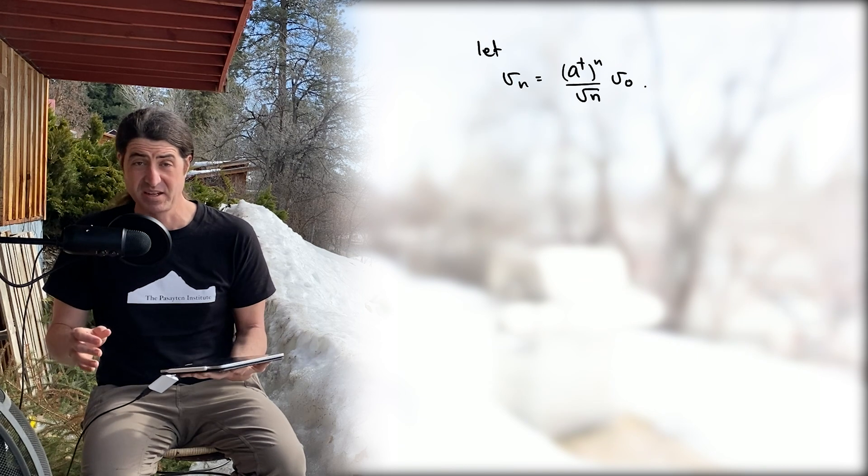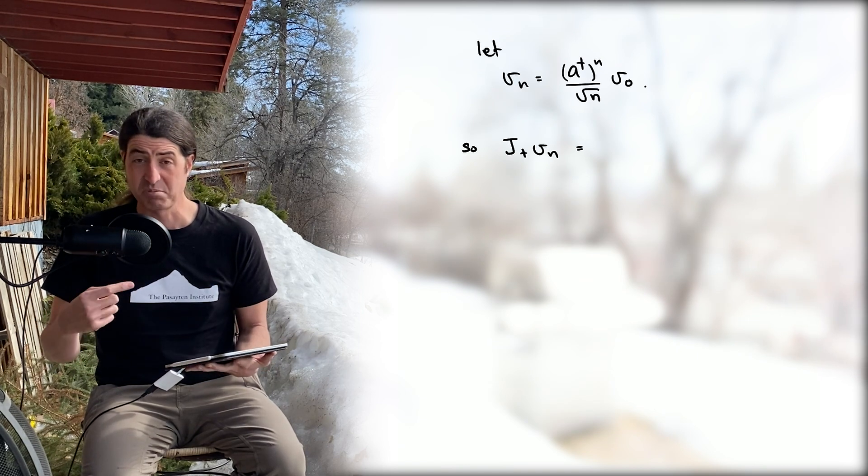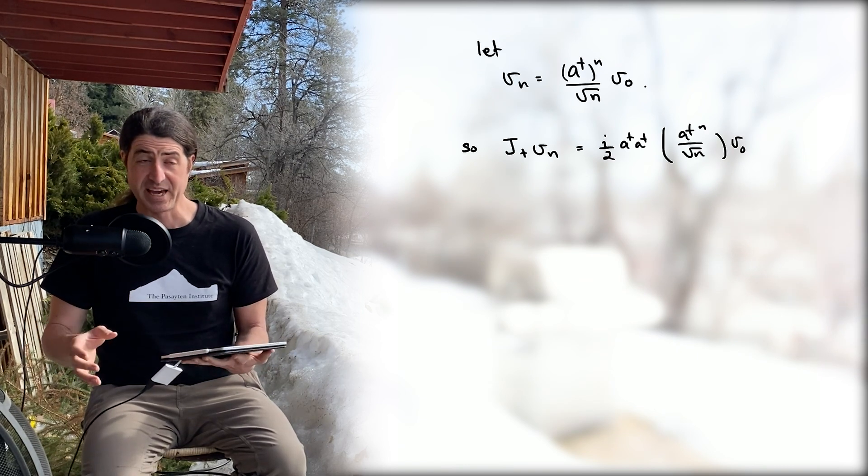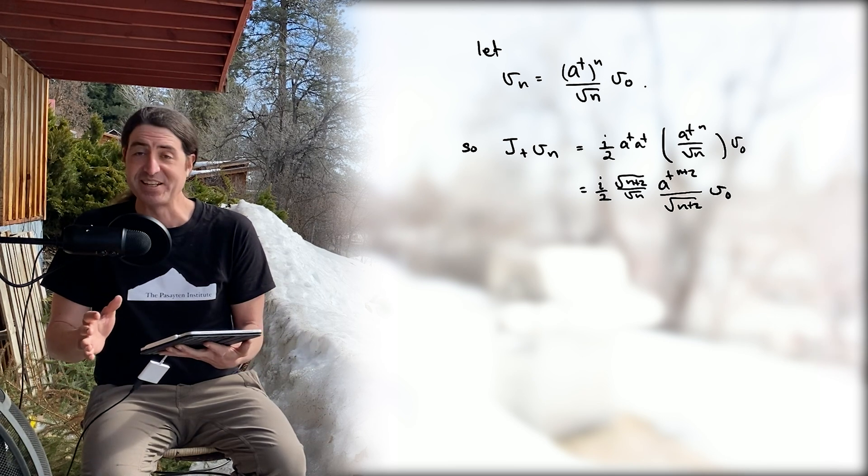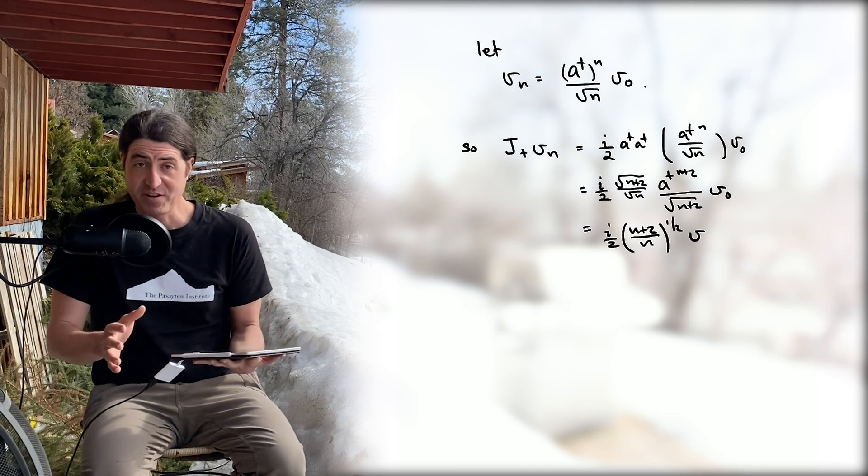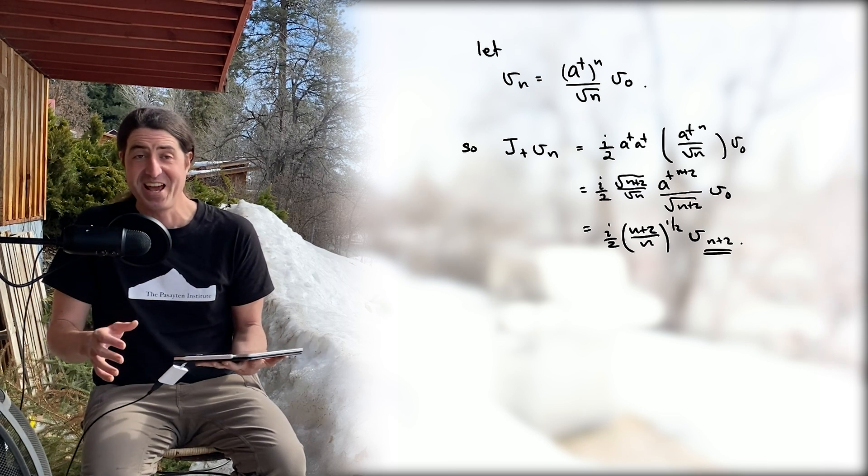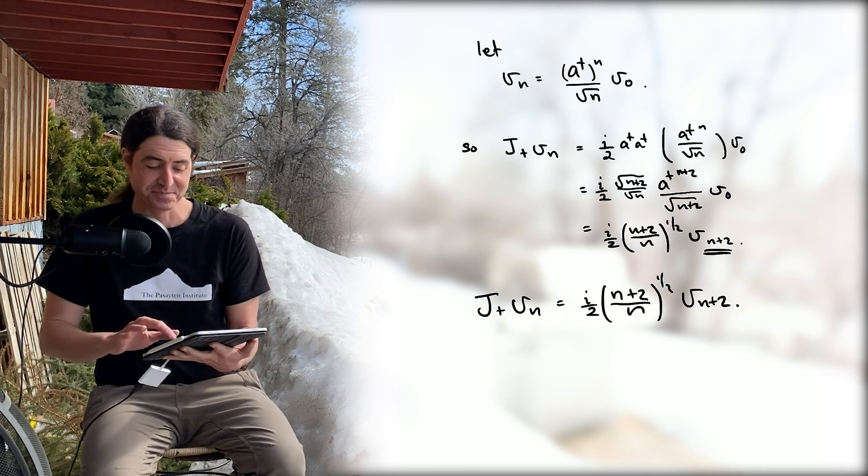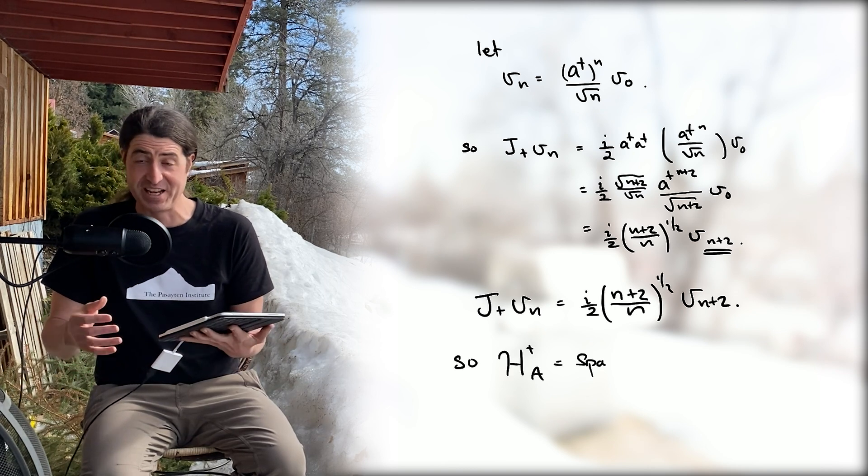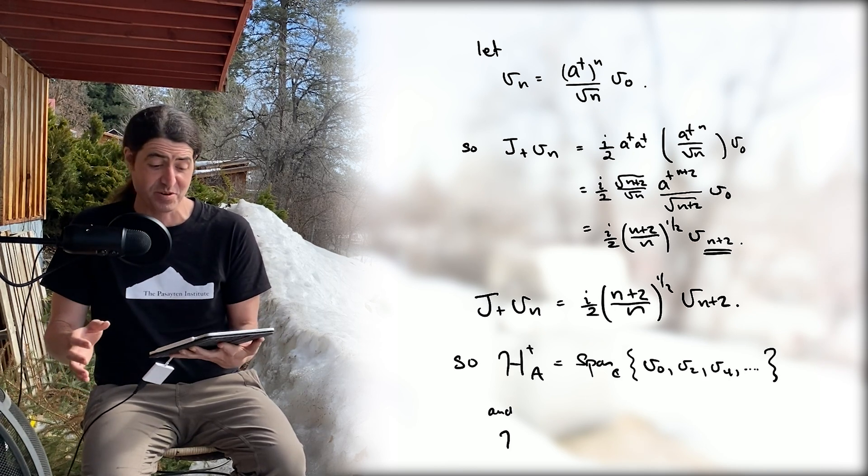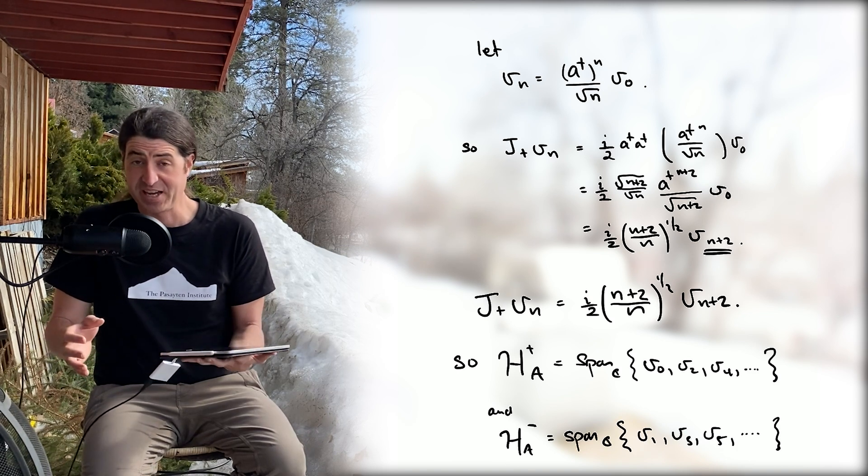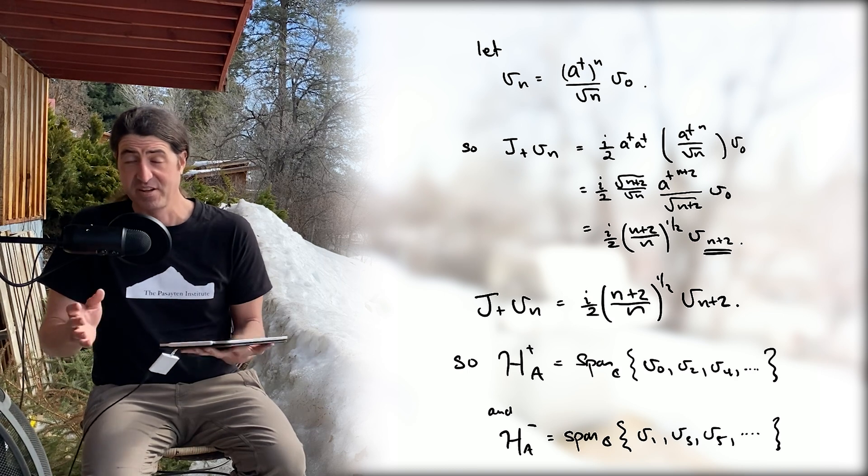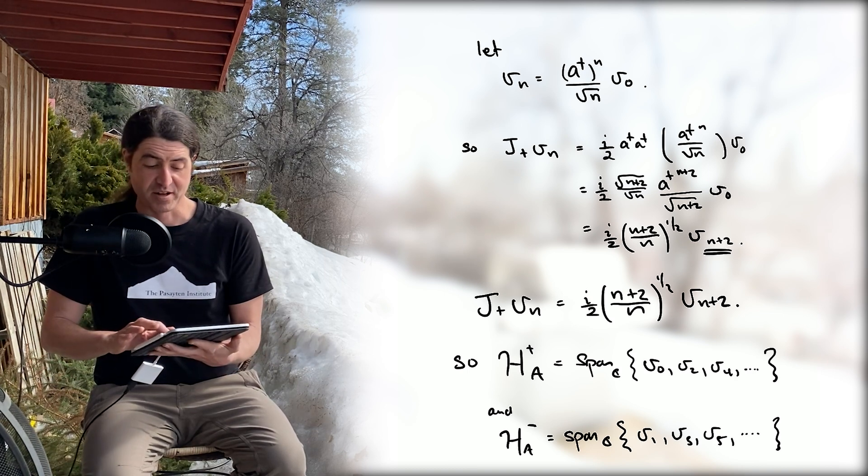It's not hard to see then that by continuous action by J+ on these states, you're going to get the two irreducible representations as basically the span of all even vectors v_n and the span of all odd vectors v_n. These will form two irreducible representations of SU(2) in such a way that the module H_A just splits up into the direct sum of even and odd states.